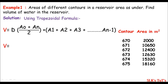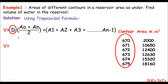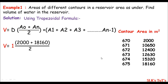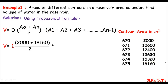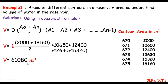I'll plug values into the trapezoidal formula: V equals D times... Just look at these contours — 670, 671, 672 — the difference is 1 meter, so the contour interval D is 1 meter. So V equals 1 times the sum of first and last contour areas divided by 2, plus the sum of the remaining four contour areas. Doing the math, the volume of water in the reservoir is 61,080 cubic meters.